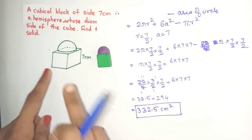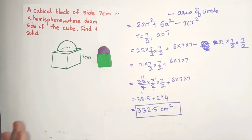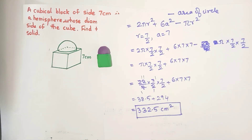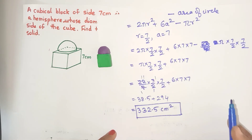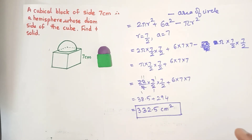Solving this, the surface area of the solid comes out to be 332.5 centimeters square. I hope this video has been useful to you. If so, please do like and share the video, consider subscribing to Enjoy Math, and please leave your comments in the comment section below. Till we meet again, take care.